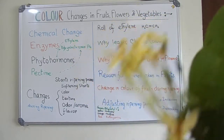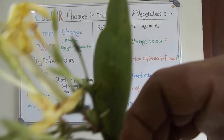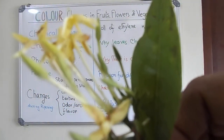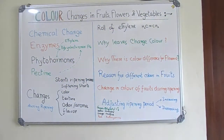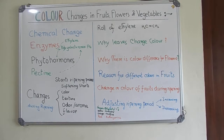Another interesting case is hydrangea. When it is grown in acidic soil, it has a different color, and when grown in basic soil, it has an entirely different color. All these colors are derived from pigments.